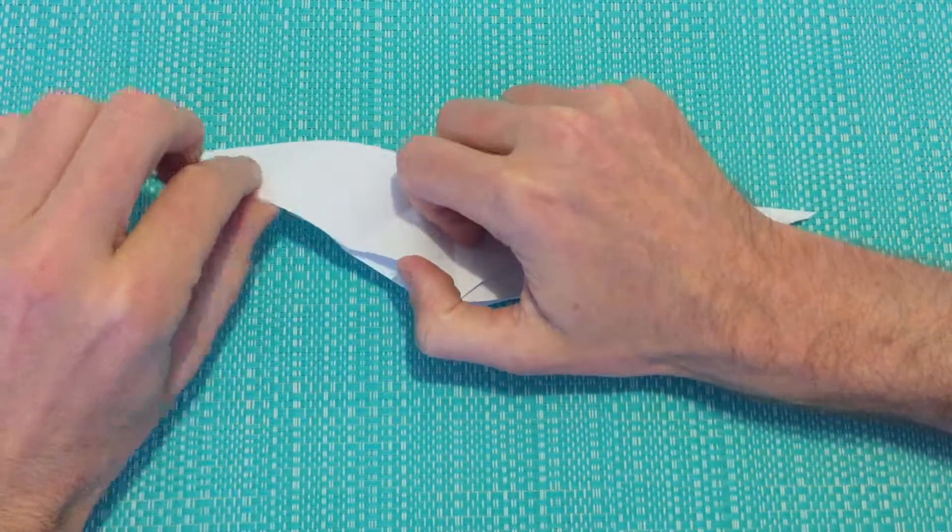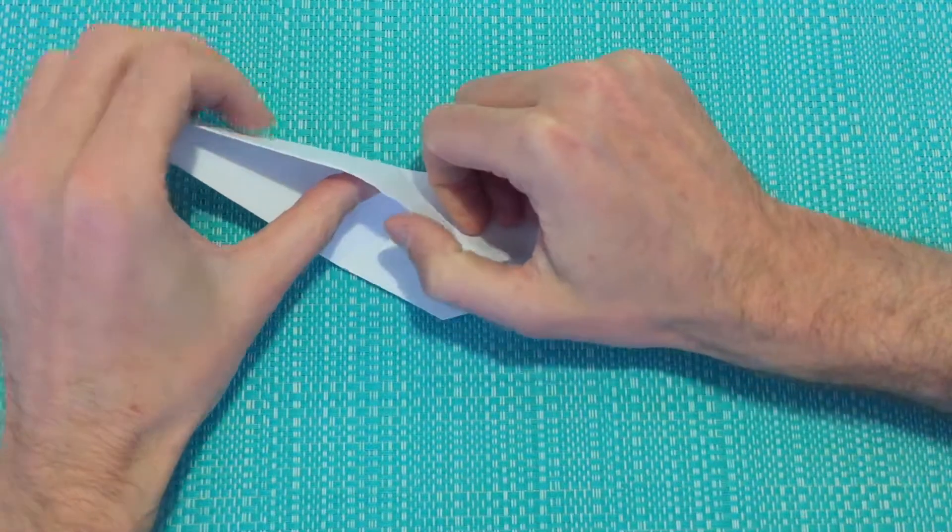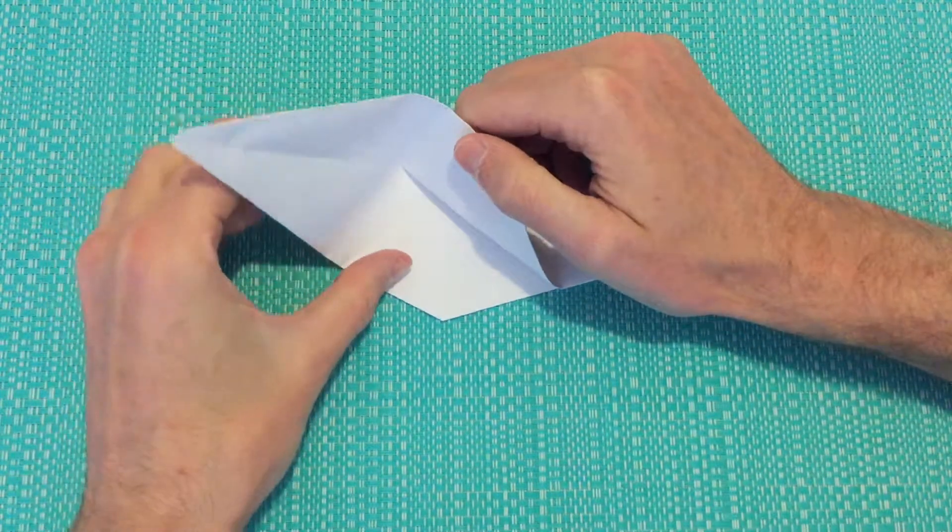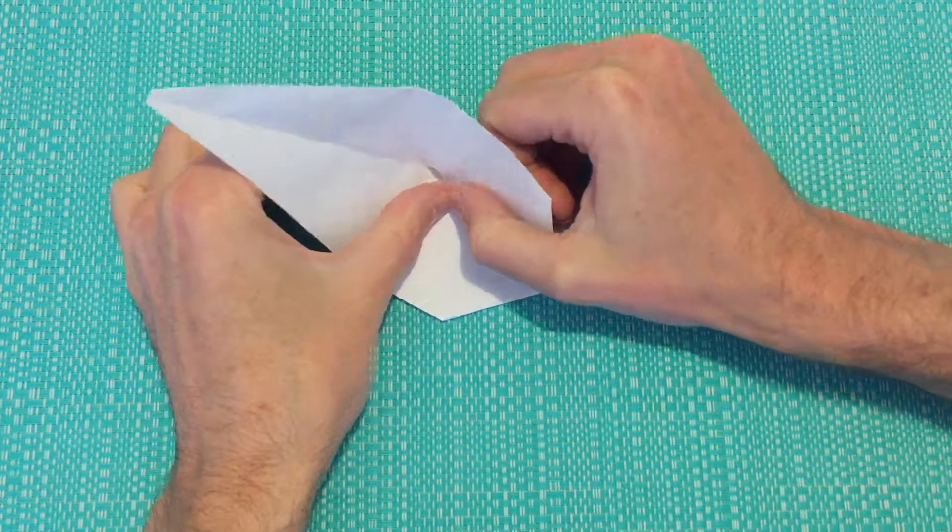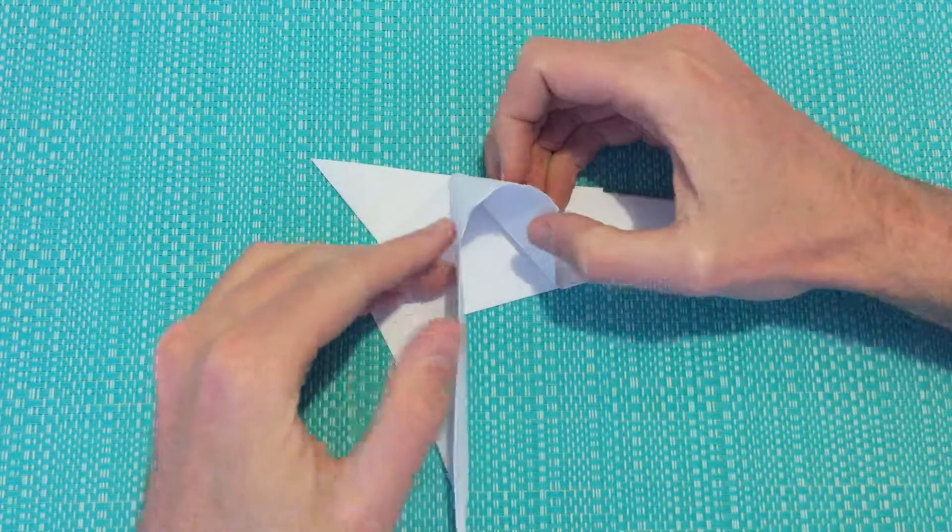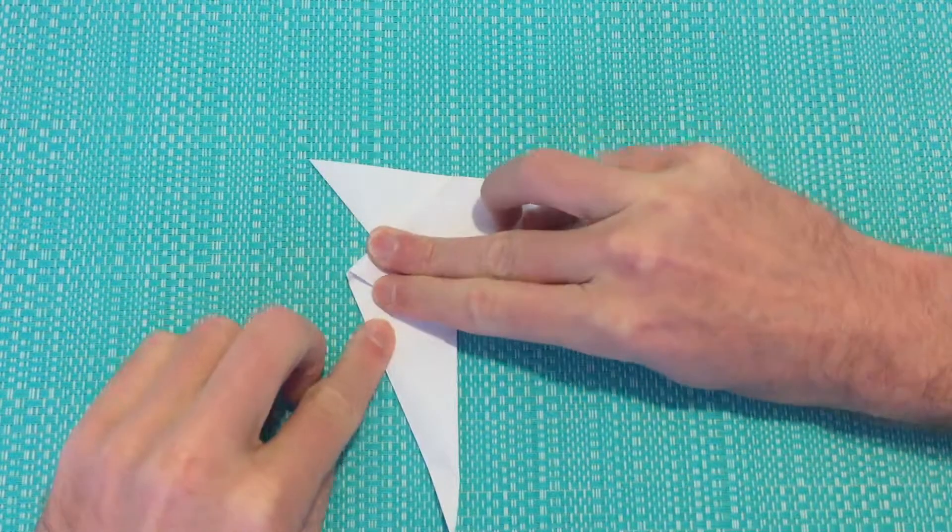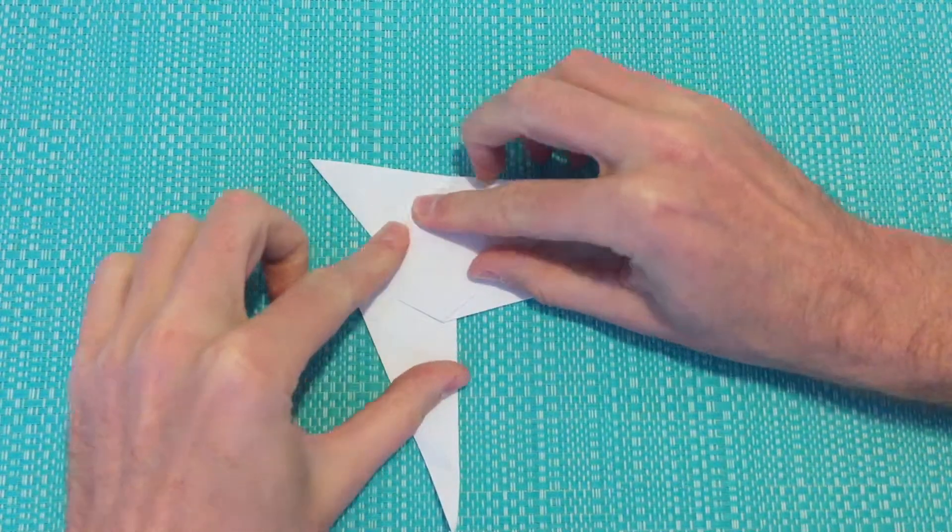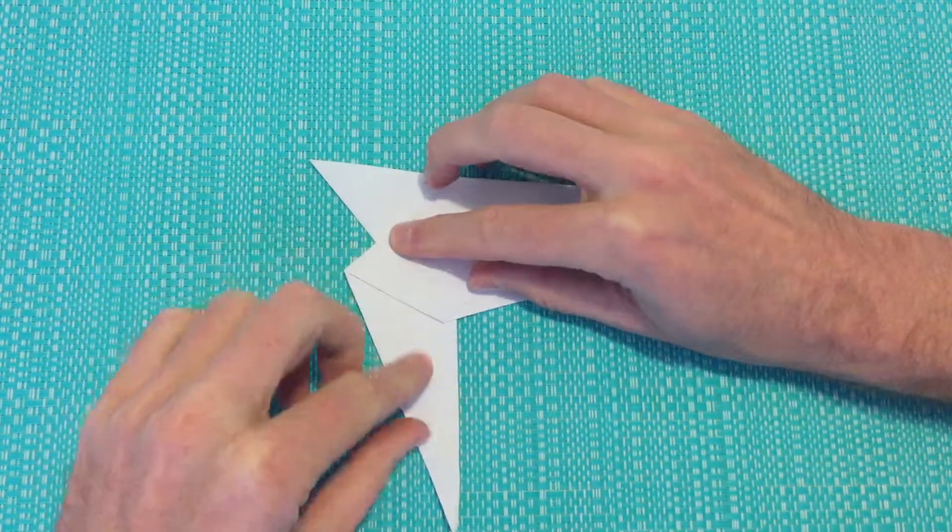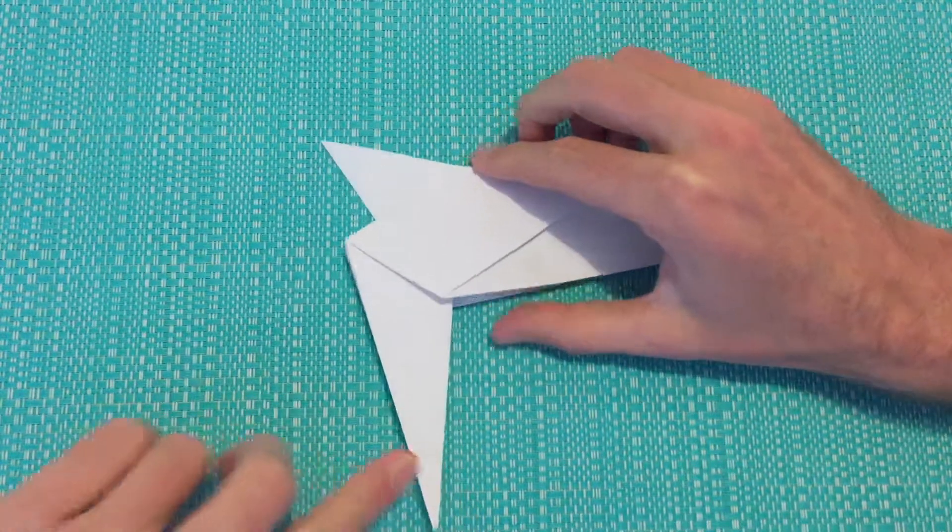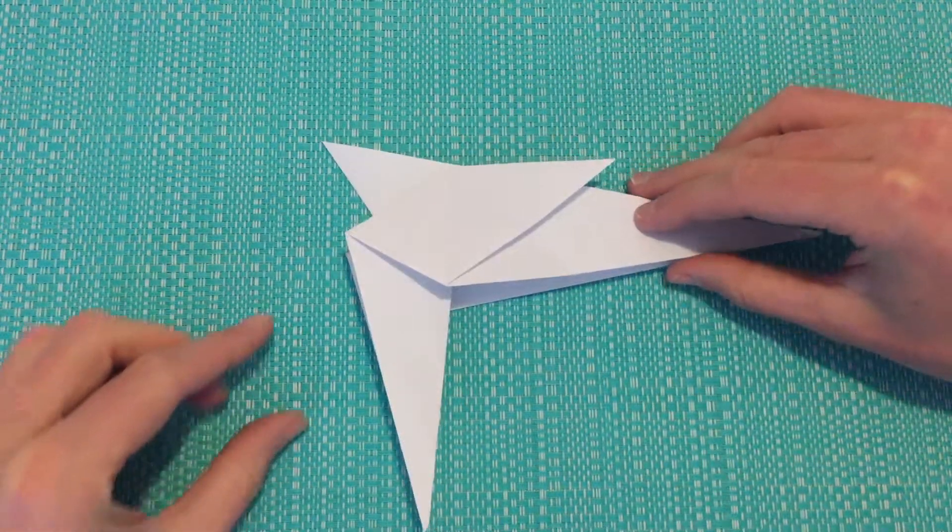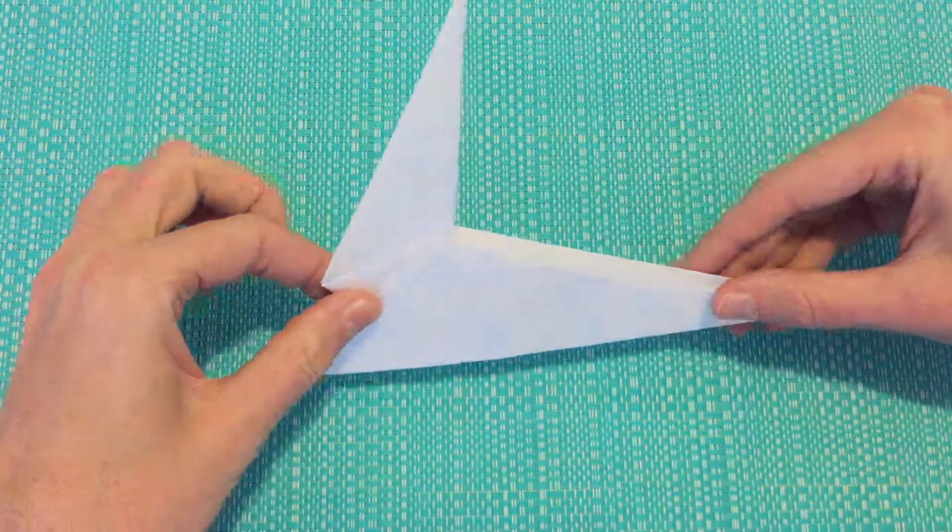We're going to open the fold up from the bottom. We're just going to be pushing those creases around the other way and bringing it back together. Now we'll lift our model up again, just going to flip it around.